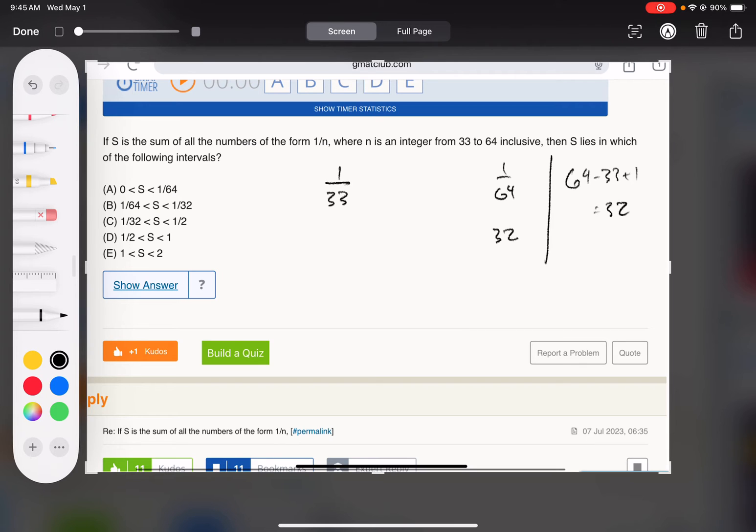If they were all 1 over 64, their sum would be 32 over 64, which is like one half. And we know S is bigger than that because 1 over 64 is the smallest number in the range. It's the smallest fraction in the range. They get progressively larger from there, so if you sum them, it's actually going to be bigger than one half.